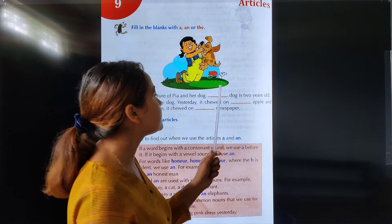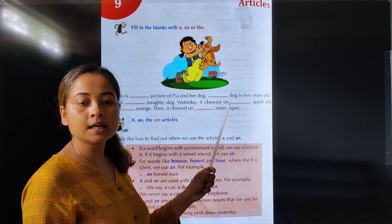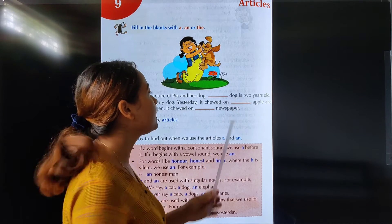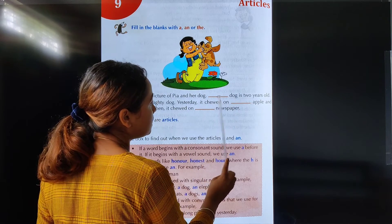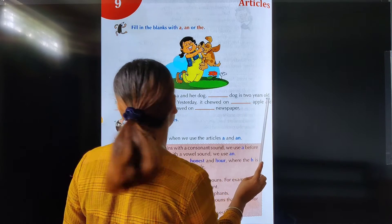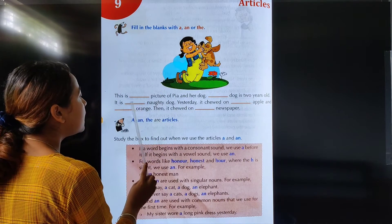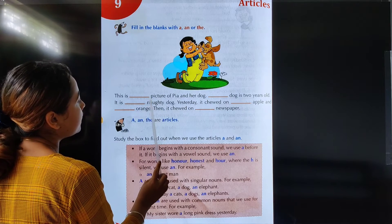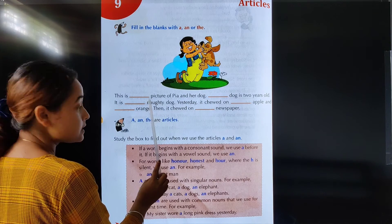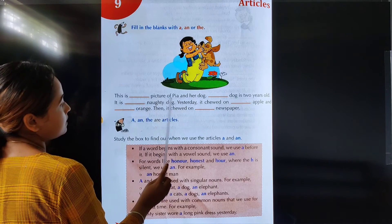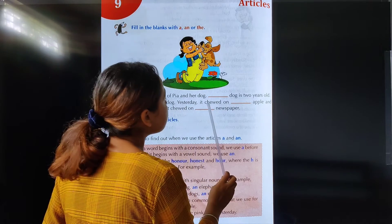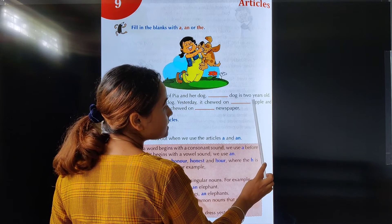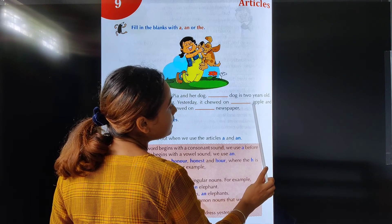Why are we writing 'the' here? Because 'the' is referring to a specific noun — dog. So it is 'the dog' and 'the dog is two years old'. It is a naughty dog — naughty starts with N. N is a consonant, so we write 'a'. It is a naughty dog. Yesterday it chewed on an apple, because apple starts with a vowel.